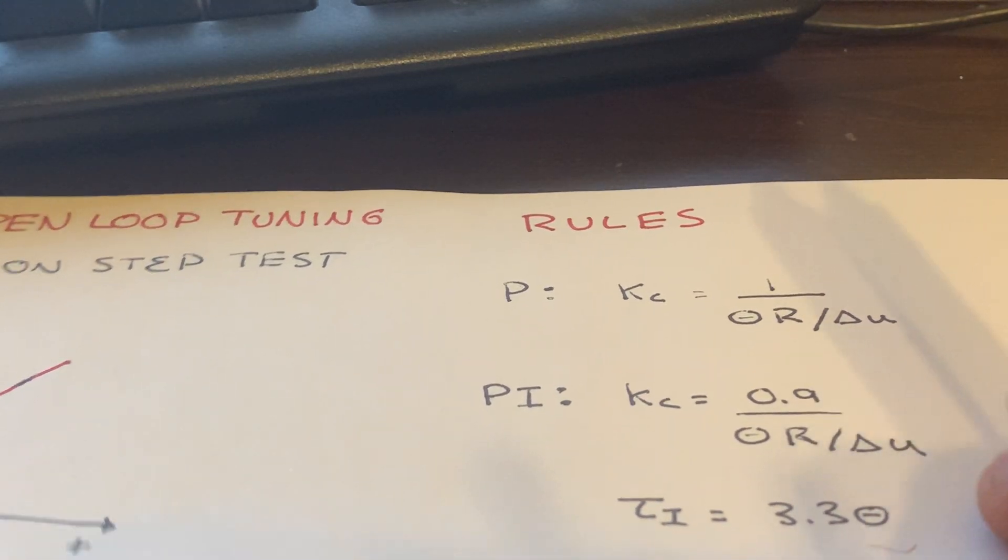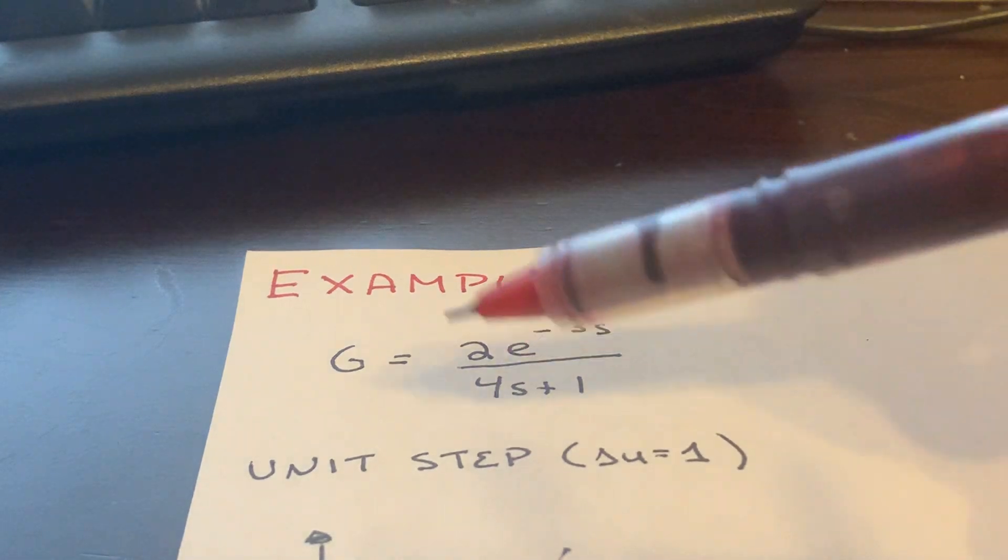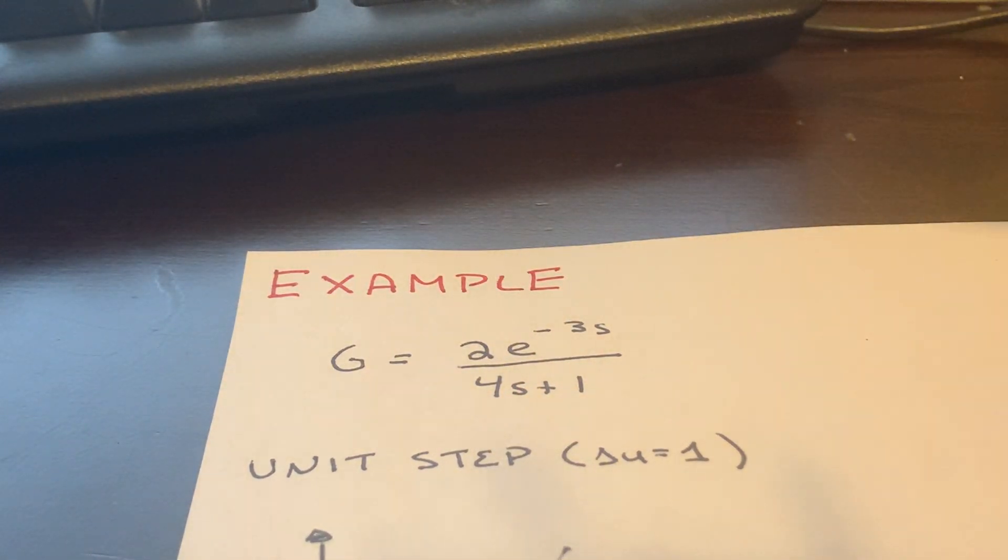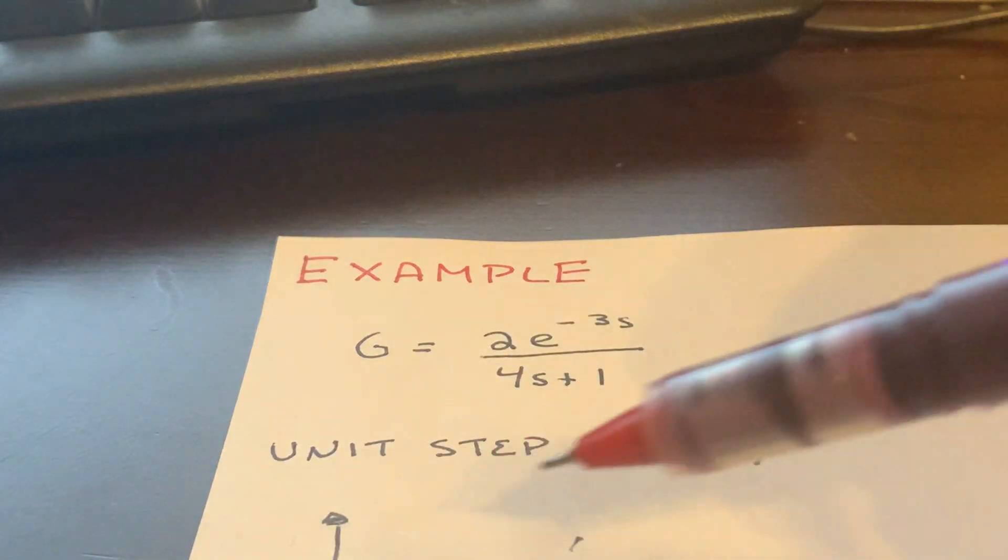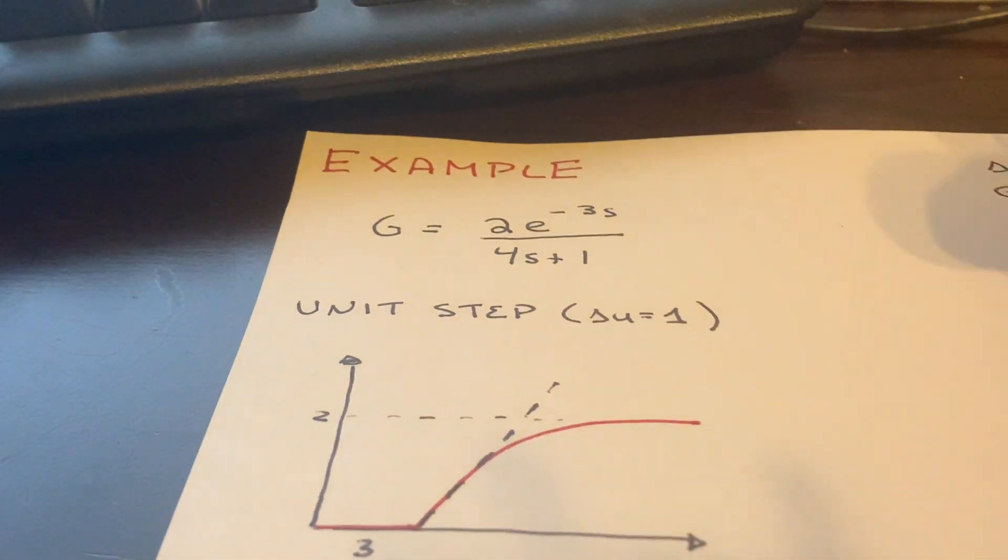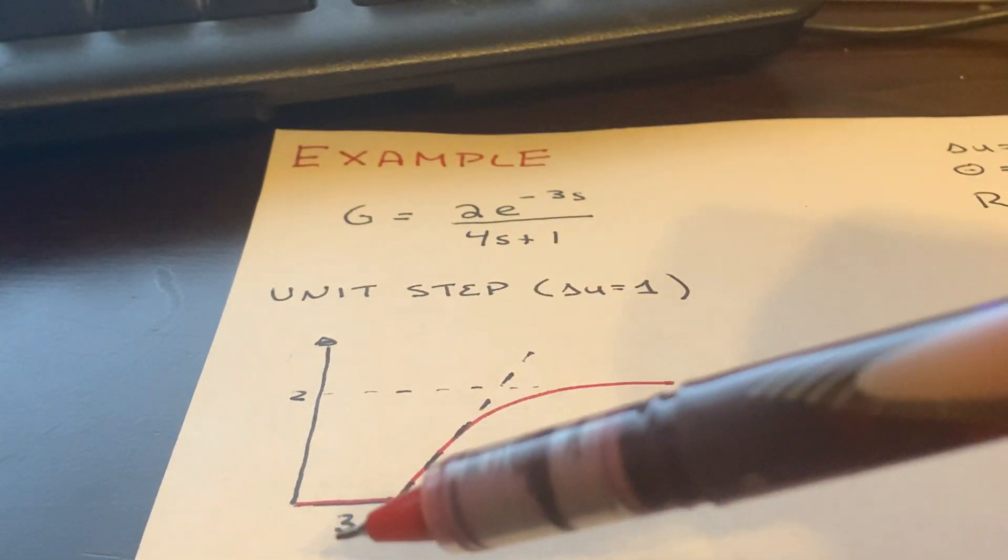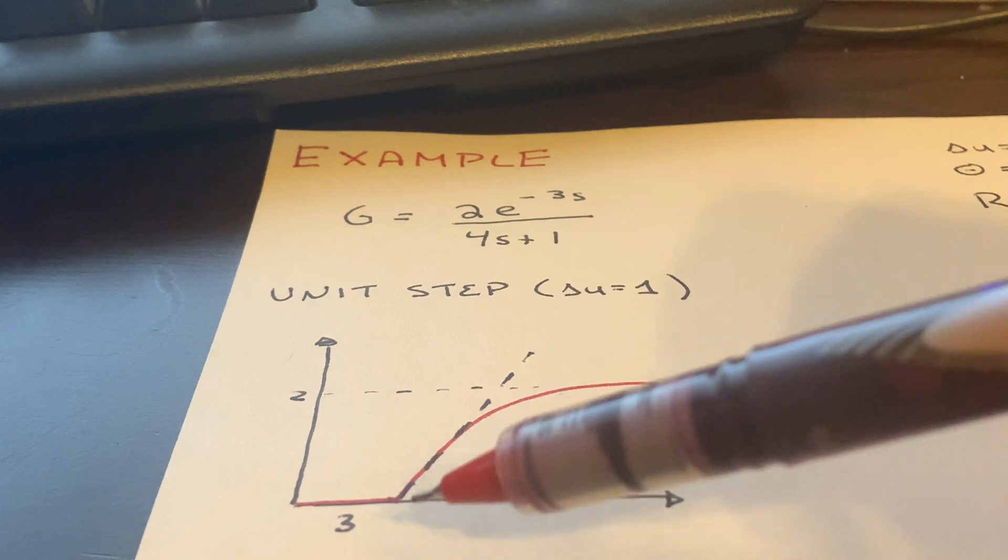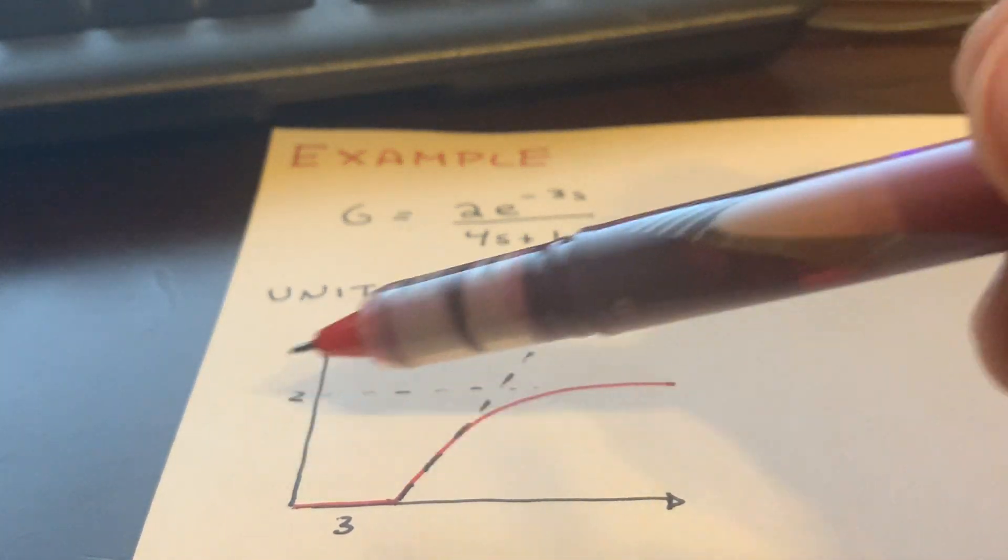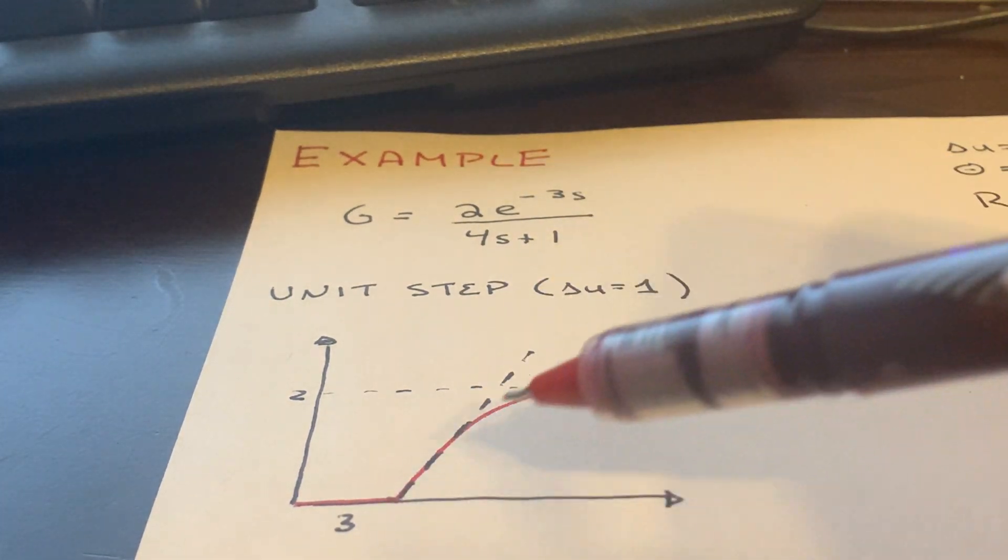Just to give you an example. If we have g equals 2 e to the minus 3s all over 4s plus 1, and we think about a unit step response for this, we're going to have delta u equals 1. We're going to have a delay of 3, then a first order response, and then it's going to settle out at the value of 2, which is the gain of our system. We're interested in this initial slope.